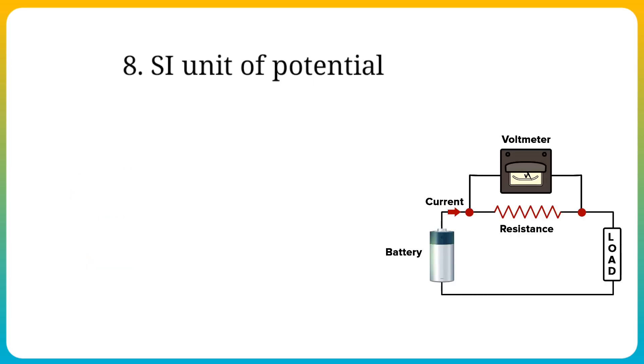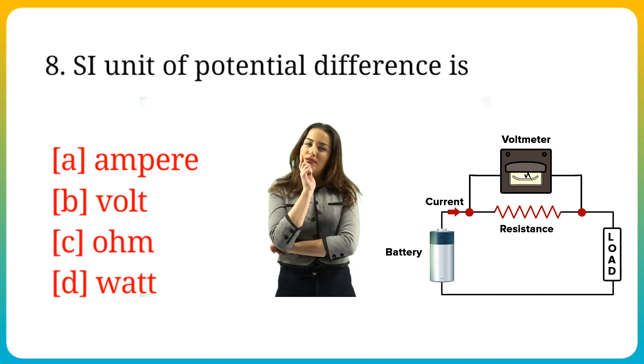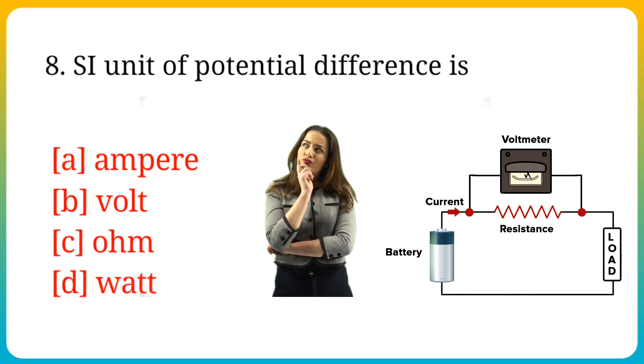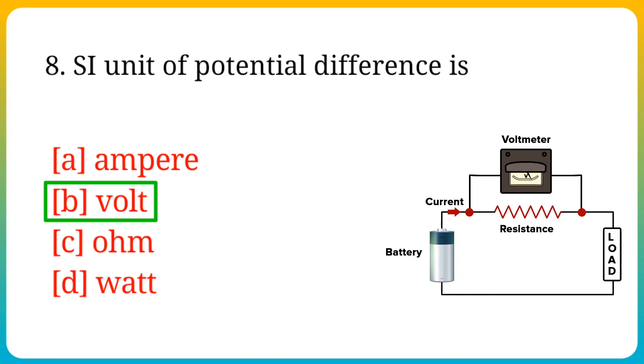Question number 8. SI unit of potential difference. Options are: A. Ampere, B. Volt, C. Ohm, D. Volt. Answer is option B. Volt.